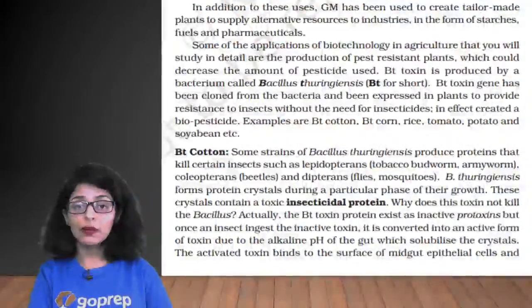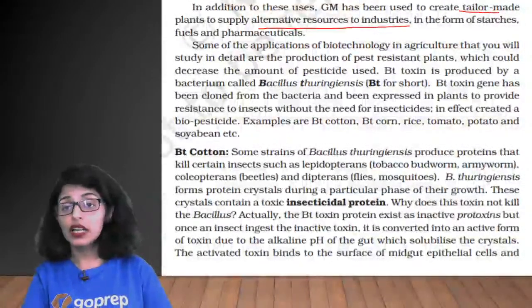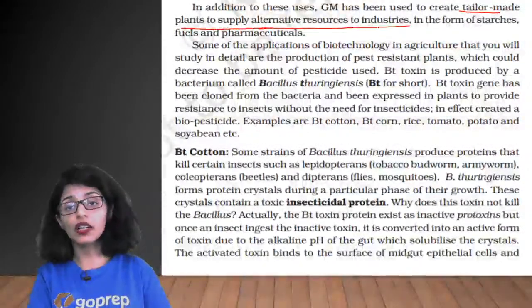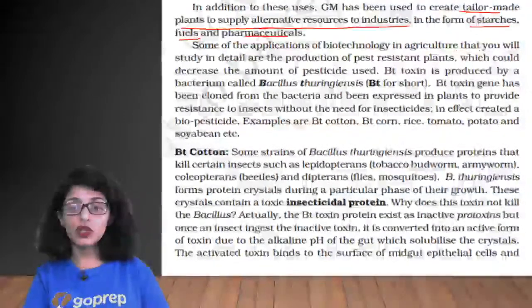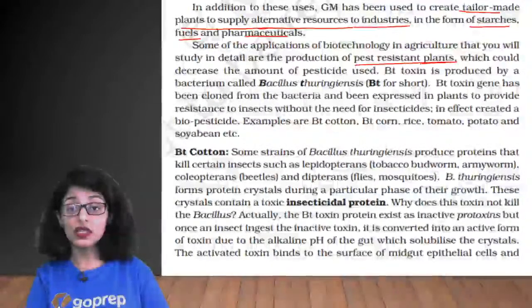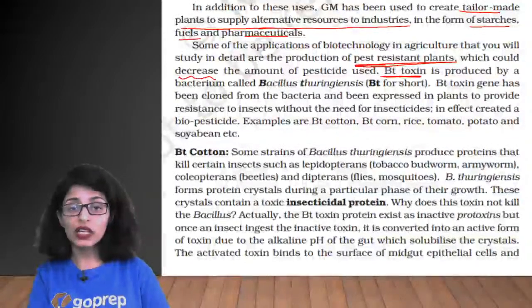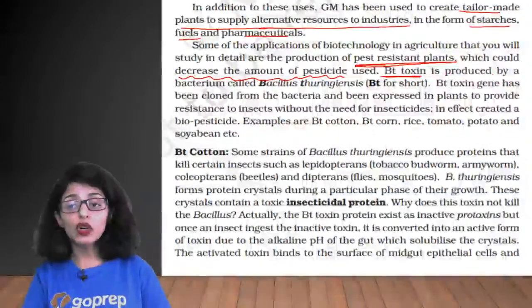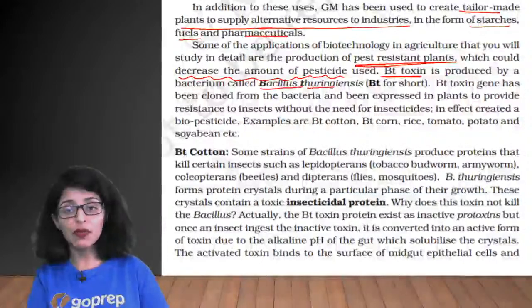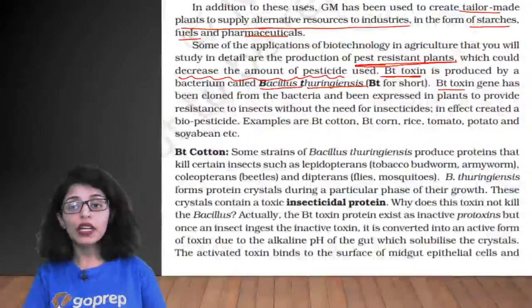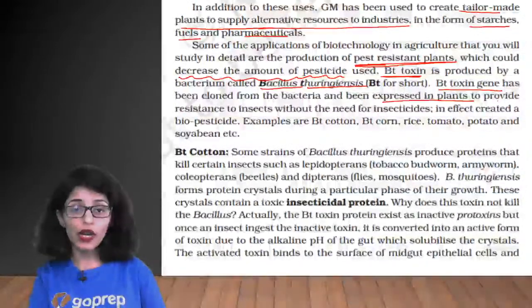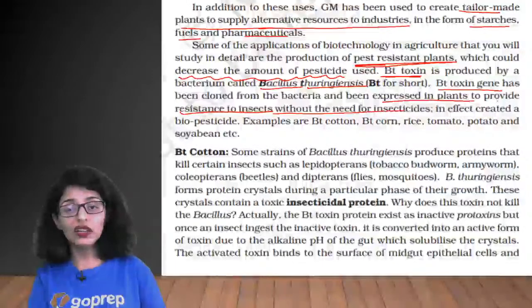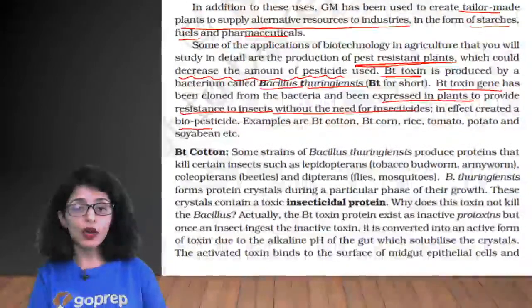GM has also been used to create tailor-made plants to supply alternative resources to industries — starches, fuels, and pharmaceuticals. One important application is pest-resistant plants into which Bt toxin has been introduced. These decrease the need for pesticides because the Bt toxin is produced by the bacterium Bacillus thuringiensis. The Bt toxin gene has been cloned from the bacteria and expressed in plants to provide resistance to insects without the need for insecticides — in effect, creating a biopesticide.